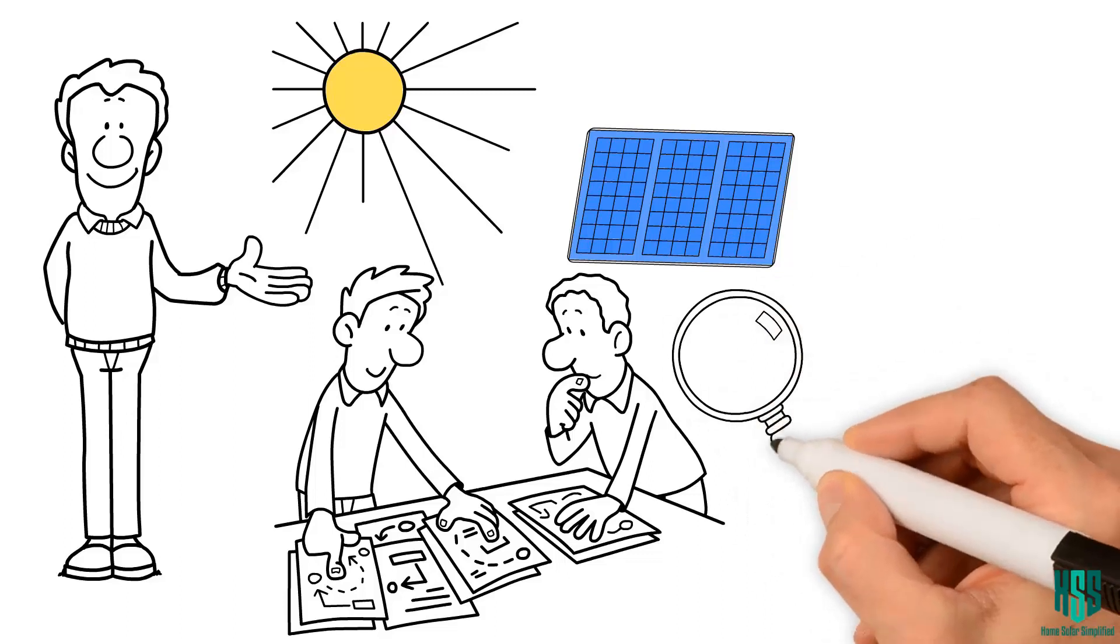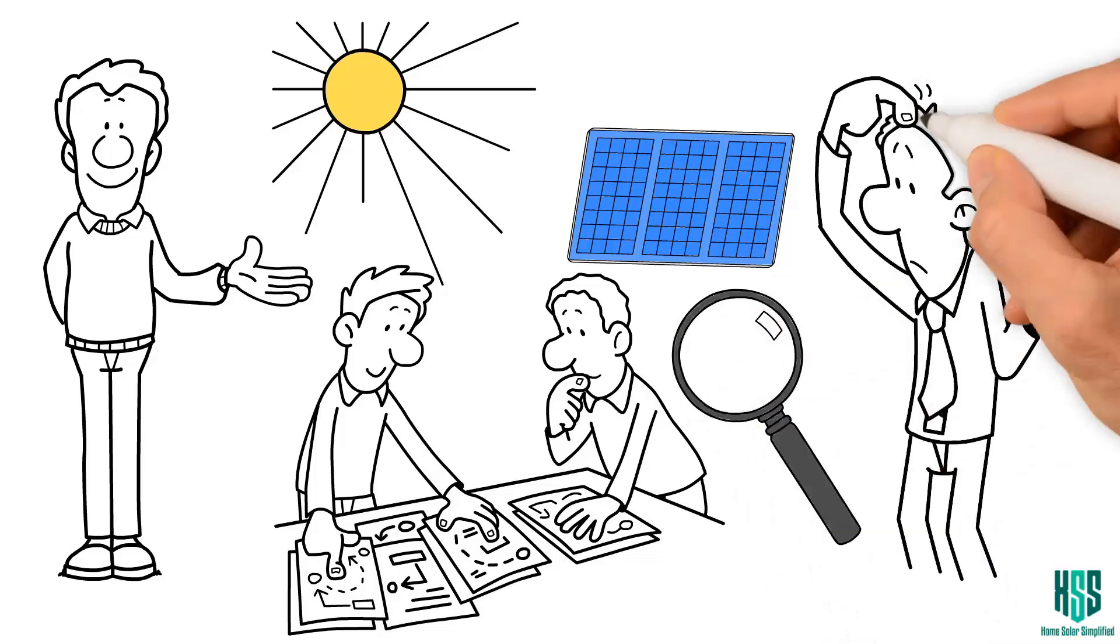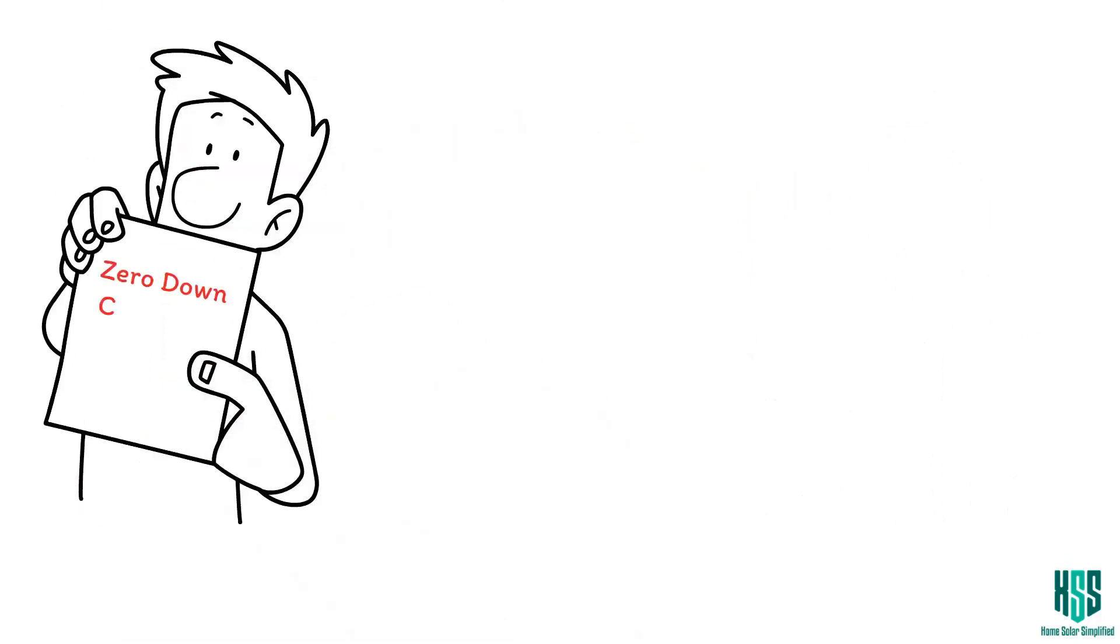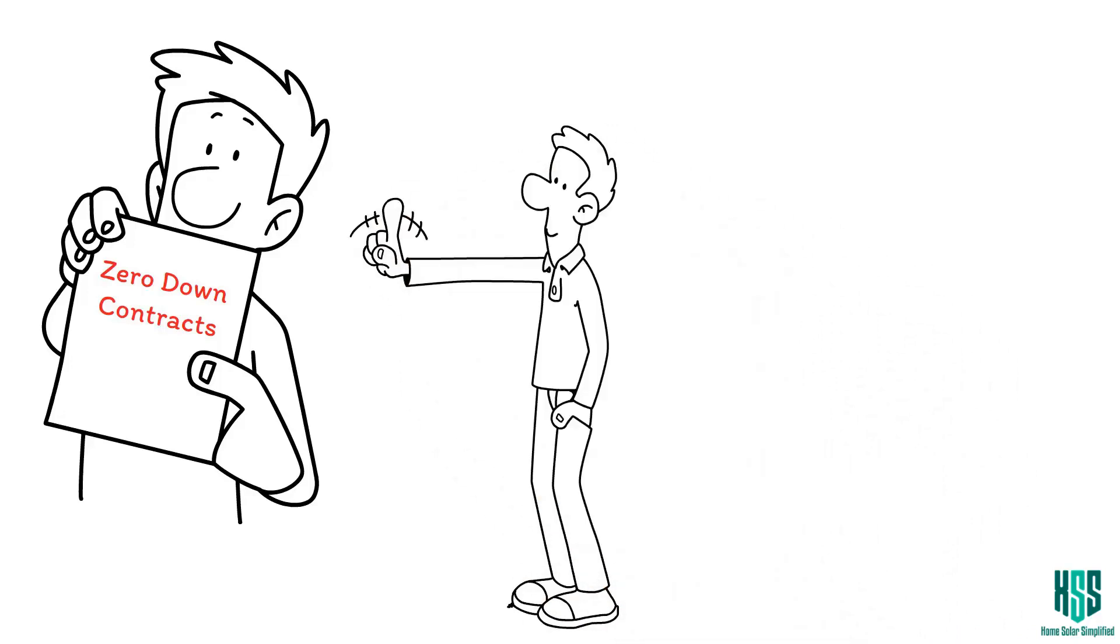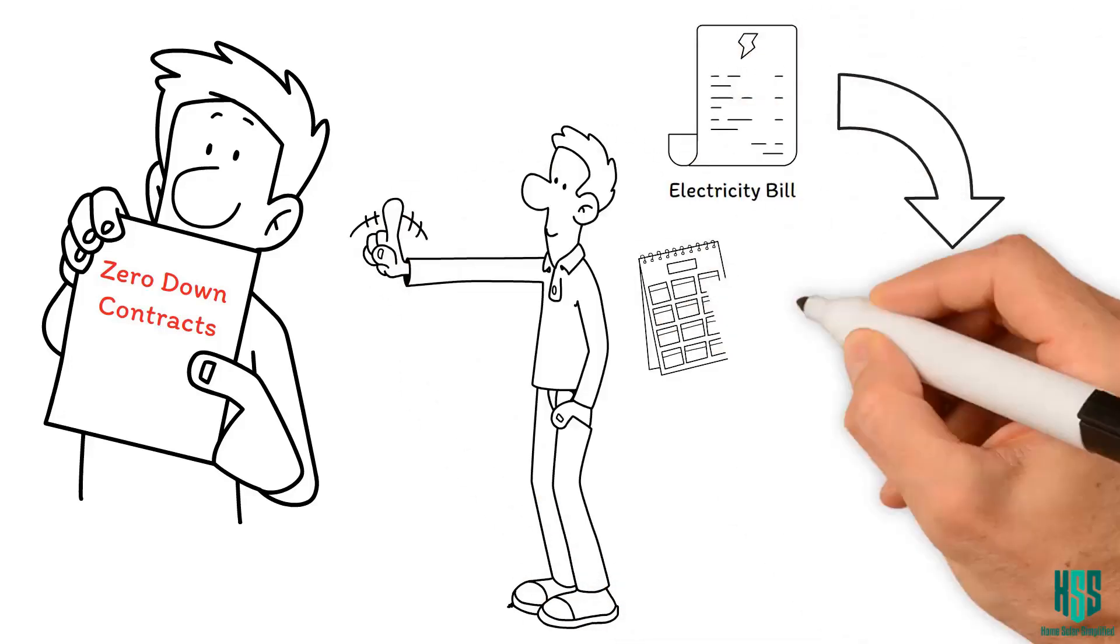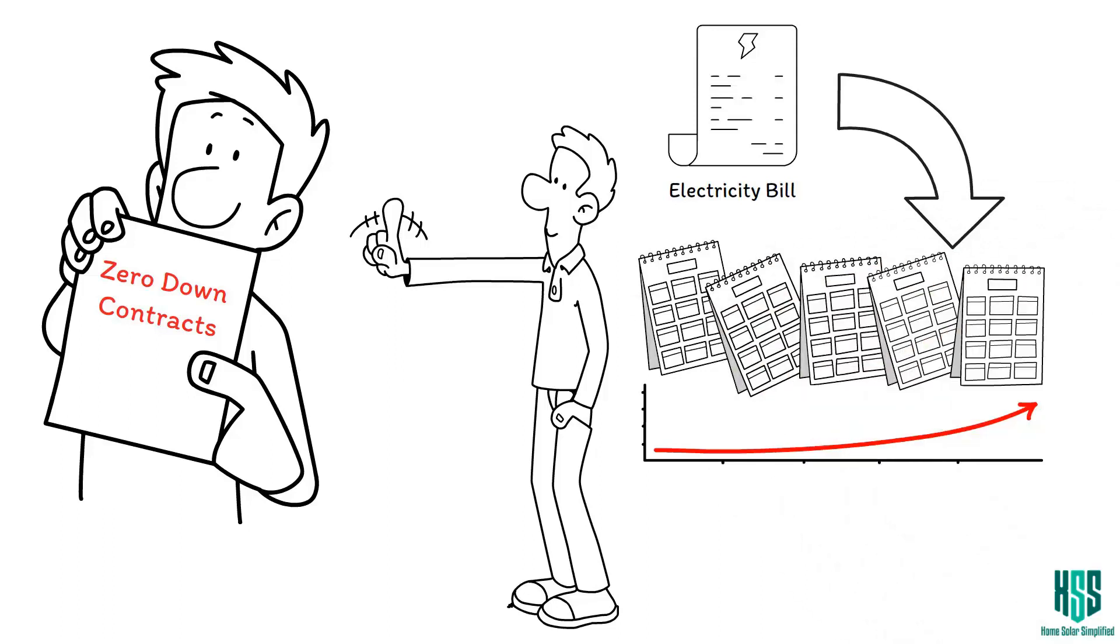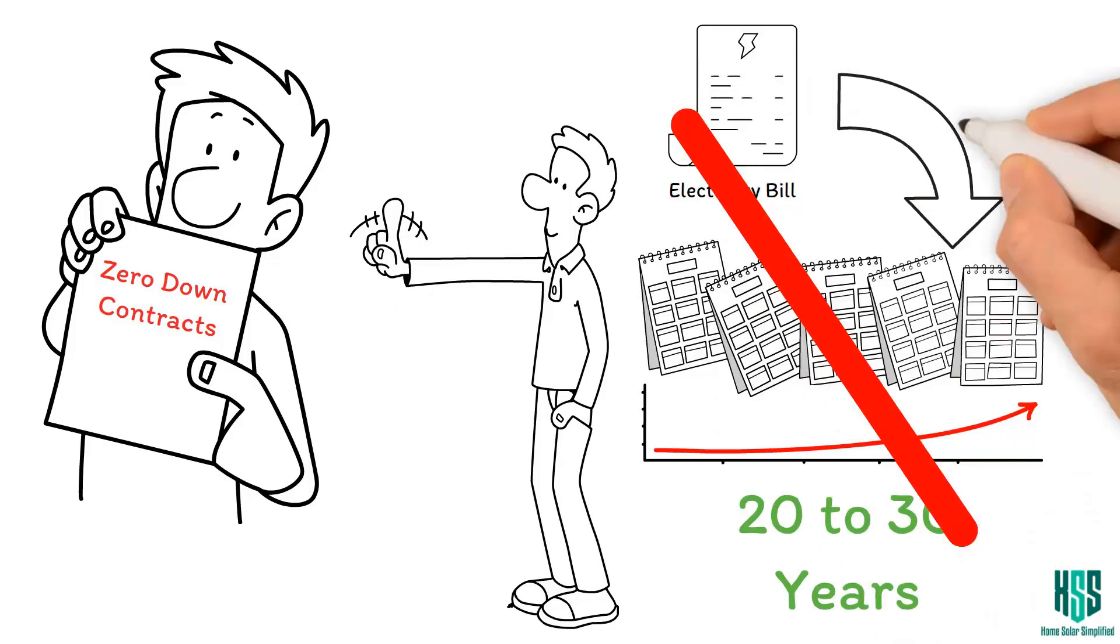But before we dive into details, let's straighten out a few things that might have you scratching your heads. First off, those zero-down contracts. Yeah, you might want to steer clear of those. It's like swapping your regular electricity bill for a super-long lease, like 20 to 30 years. Doesn't exactly sound like a winning deal, right?